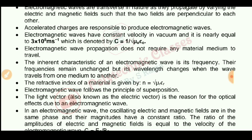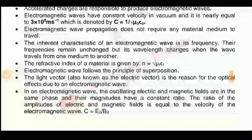The speed of an electromagnetic wave is given by 1 divided by the square root of mu-naught times epsilon-naught — that is, permeability times permittivity of vacuum.